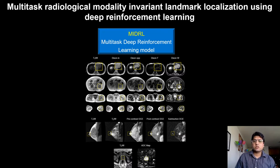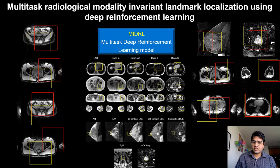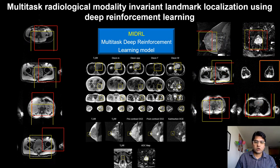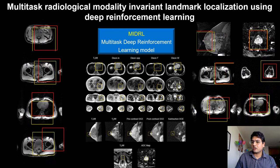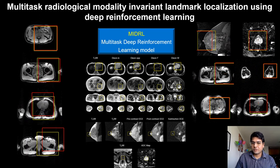To that end, we train single and multi-agent reinforcement learning models to localize six different landmarks across a wide variety of imaging sequences. The videos on the left correspond to the multi-agent model and the videos on the right correspond to the single agent model.